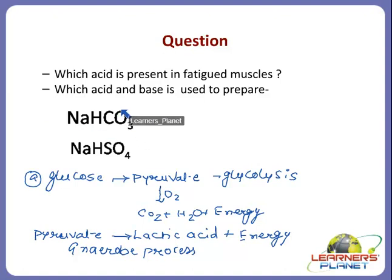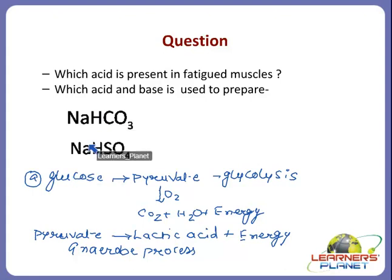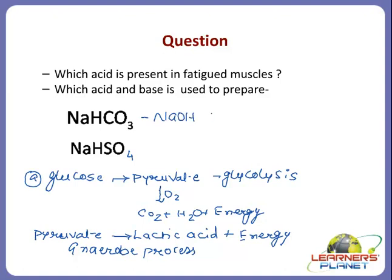Now let's take up our next question: which acid and base is used to prepare NaHCO3 and NaHSO4? For NaHCO3, since Na is present, the base would be NaOH. And since carbon dioxide is present, the acid would be H2CO3, that is, carbonic acid.